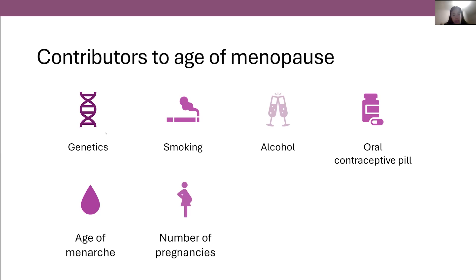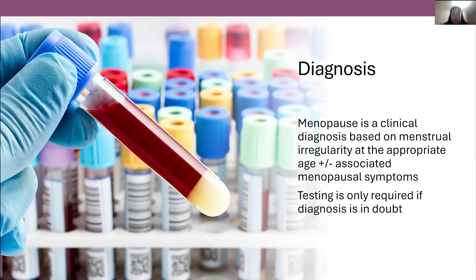The number of pregnancies has been associated with the age of menopause, potentially because whilst you're pregnant your regular ovulation is on hold, delaying the age of menopause. Diet may affect your age of menopause — an increase in unsaturated fat reduces the age, while fruit and protein intake delays it. A higher BMI results in a higher age of onset of menopause. Menopause is a clinical diagnosis based on menstrual irregularity occurring at the appropriate age with or without associated symptoms. Testing is only required if the diagnosis is in doubt, usually testing hormone levels, which may occur if menopause is occurring earlier than expected or symptoms may be concerning for another diagnosis.